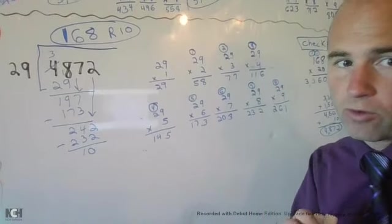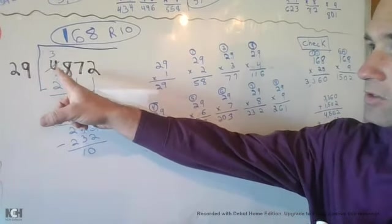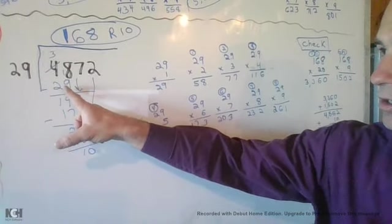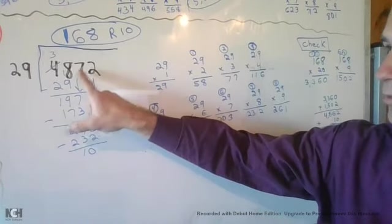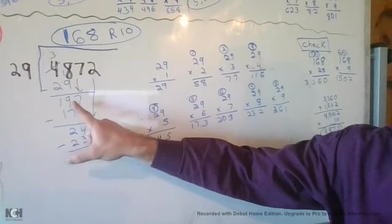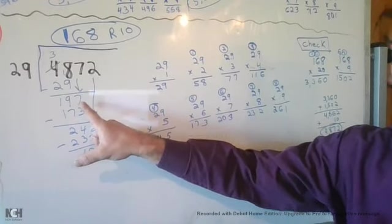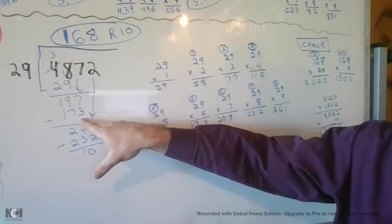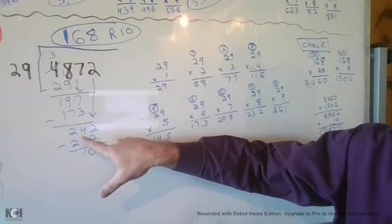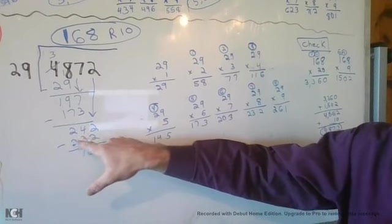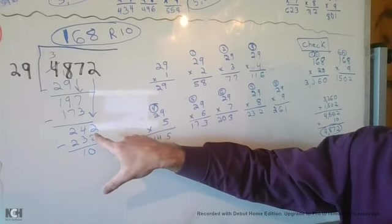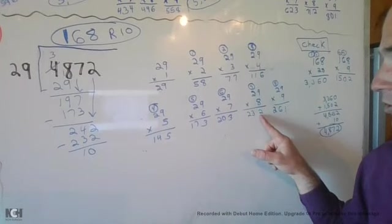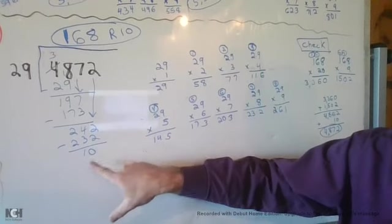Here we are with number four. The answer you should have received was 168 remainder 10. 29 goes into 48 one time, and 1 times 29 gives you 29. You subtract to get 19, bring down your 7 to have 197. 29 goes into 197 six times, the closest you can get. You get 173, subtract to get 24. Bring down the 2 from the ones place to have 242. 29 goes into 242 eight times to get 232. Subtract to have 10 as a remainder.